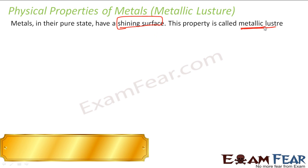So, that is the main definition. We do not define metal based on the physical properties but on the chemical properties — anything that loses an electron. But when we have defined the metals, we observe that most of the metals have a shiny surface. This property is called metallic luster. So, if somebody asks you what is metallic luster, you can say that most of the metals in the pure state have a shiny surface.